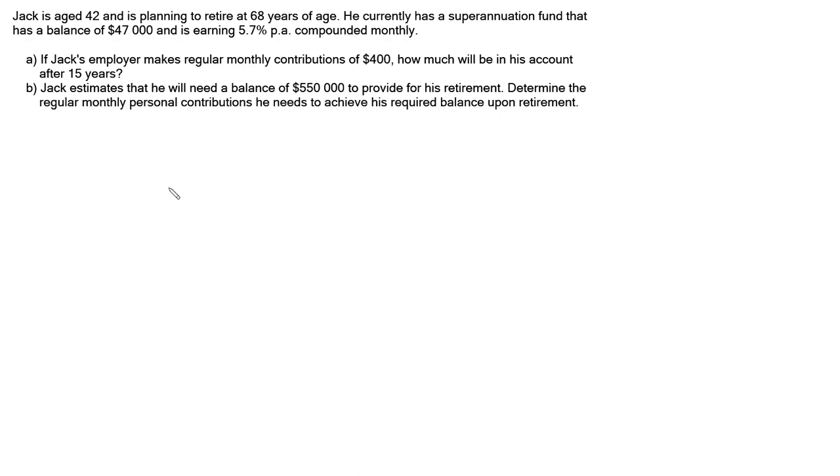So let's sort out the formula that we're going to be using first. The formula for this is an annuity, and we're trying to find the future value, basically, because we want to know how much it will be 15 years in the future. To do that, normally we use A equals M times (1 plus i) to the n minus 1 all over i, because that's the future value for an annuity.